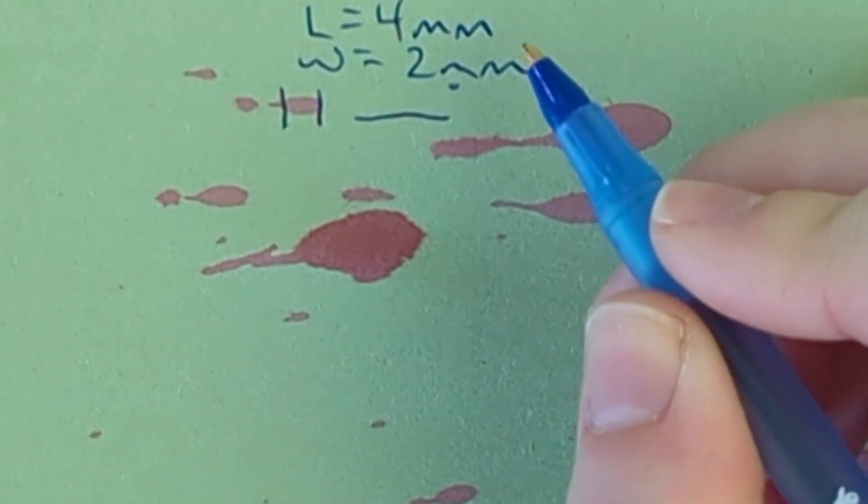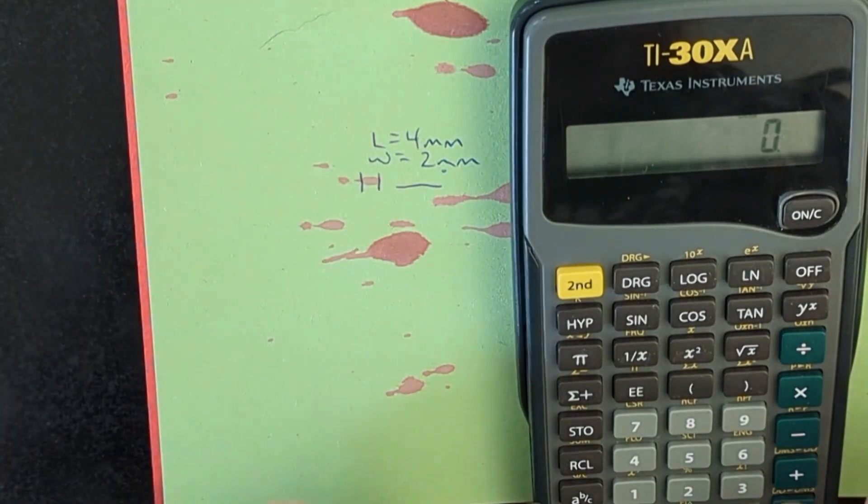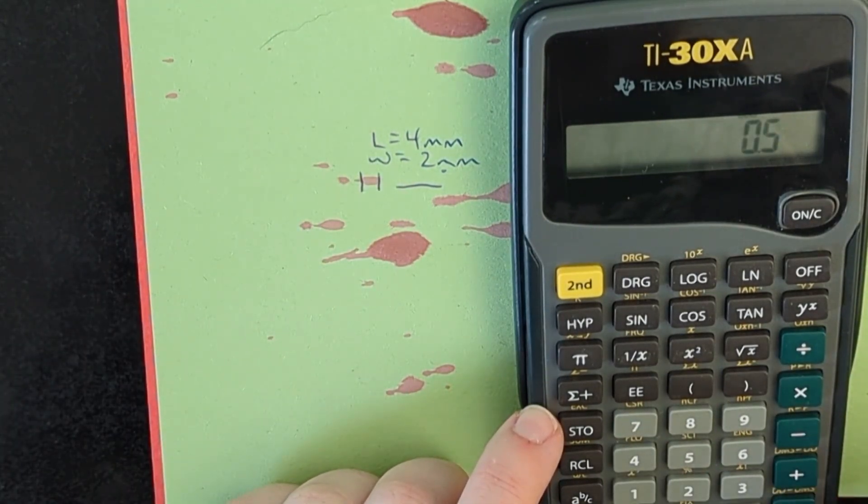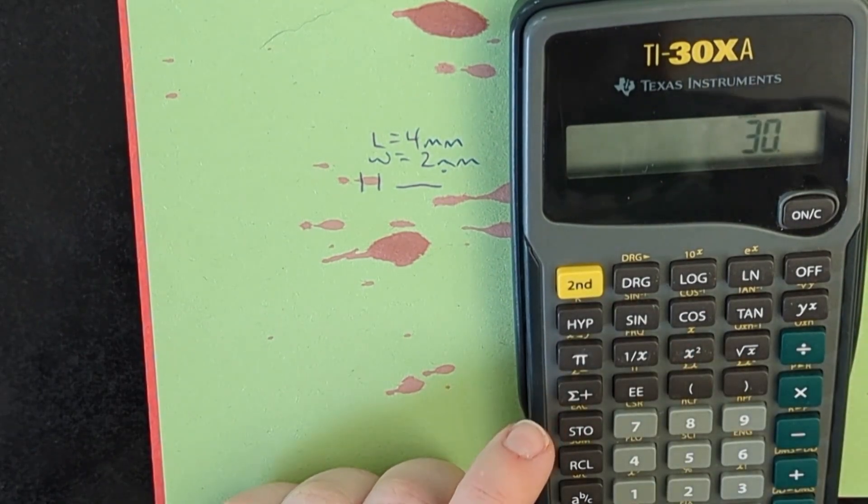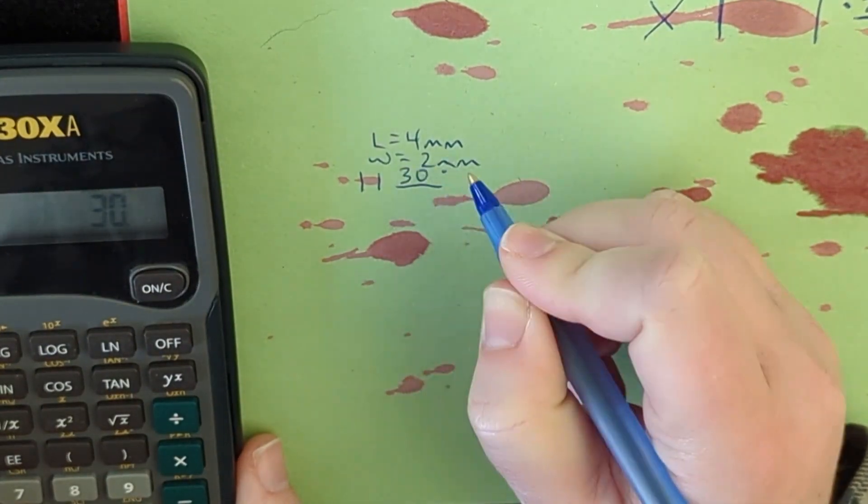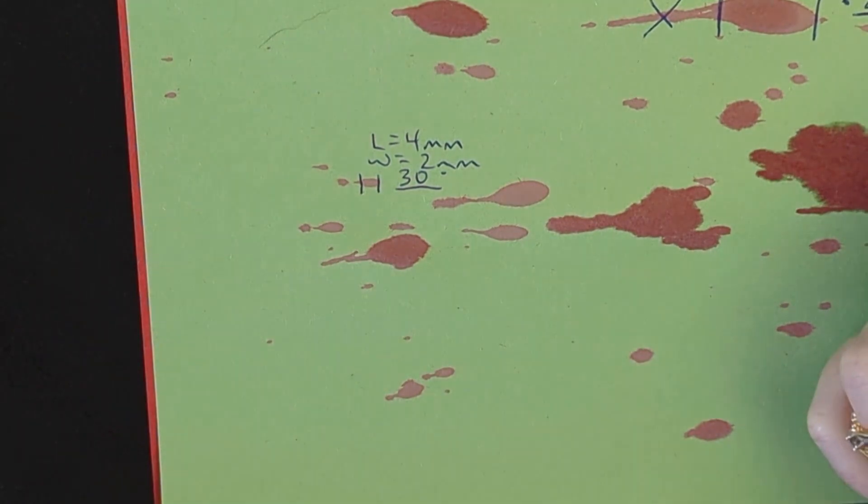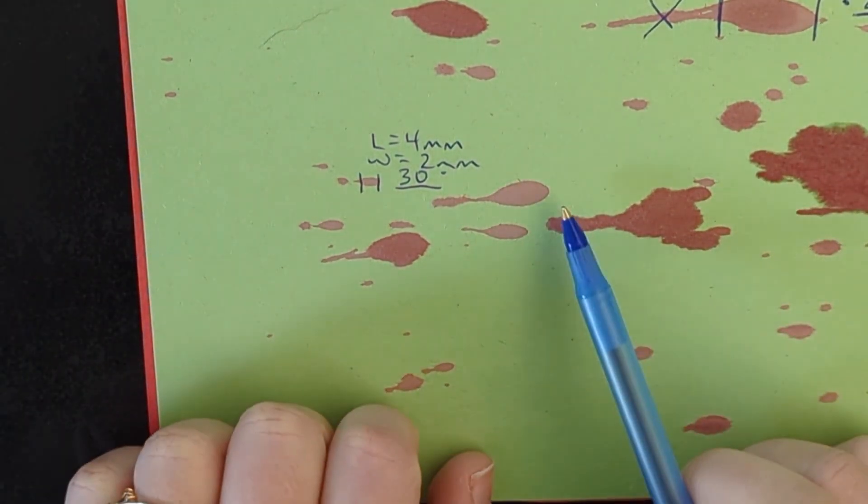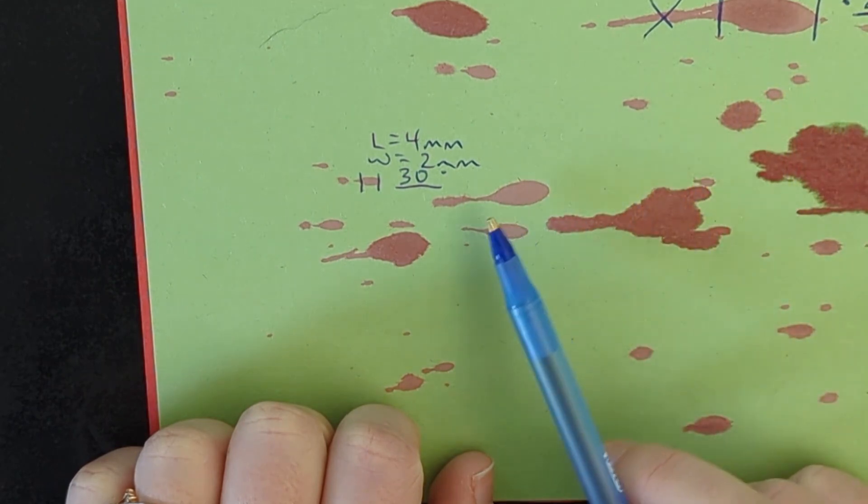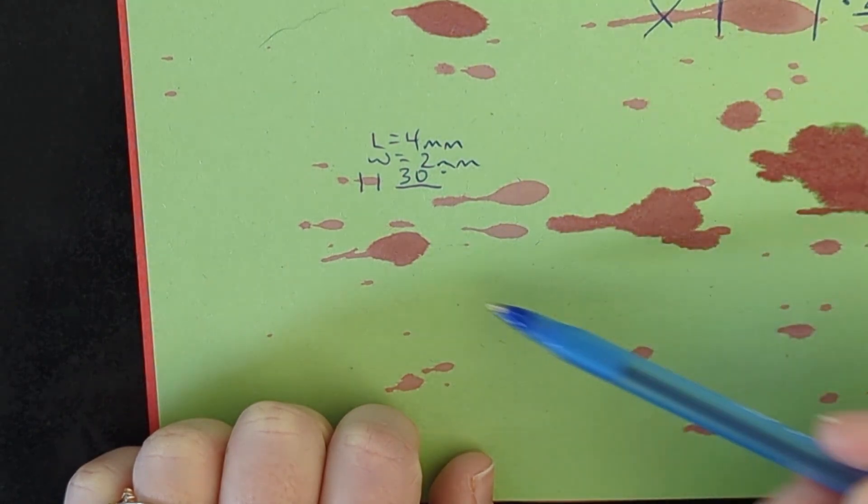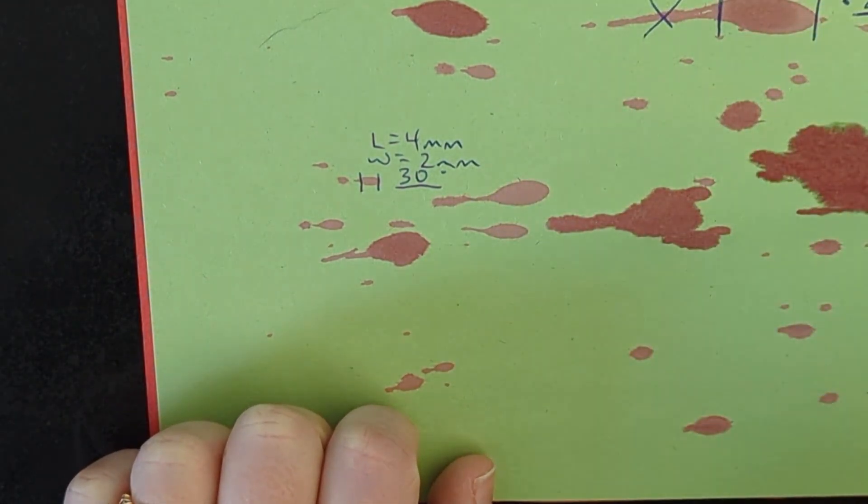So now we're going to find that angle. Let's do some math. We've got our width divided by our length. Two divided by four. And then our inverse sine. We got 30 degrees. Not every single one is going to be the same because maybe there was more than one hit. Maybe it came from a different angle from a different source. We never know. So we want to get as many blood drops measured as possible for it to be as accurate as possible.